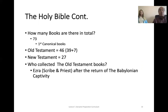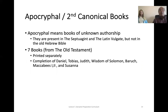In total, how many books are in the Bible? There are 73 books, known as the first canonical books. The Old Testament contains 46 books and the New Testament contains 27 books. The Old Testament has 39 books in the copies we commonly use, and seven other books known as the hidden books or apocryphal books. Ezra the scribe and priest collected the Old Testament together after the return from Babylonian captivity. The apocryphal or second canonical books are books of unknown authorship, present in the Septuagint and the Latin Vulgate but not in the Old Hebrew Bible. There are seven: the Completion of Daniel, Tobias, Wisdom of Solomon, Baruch, First and Second Maccabees, and Susanna.